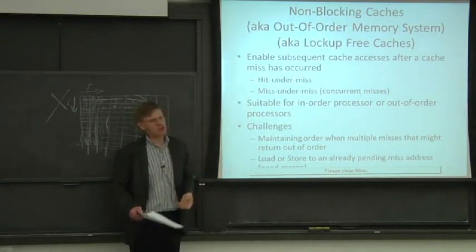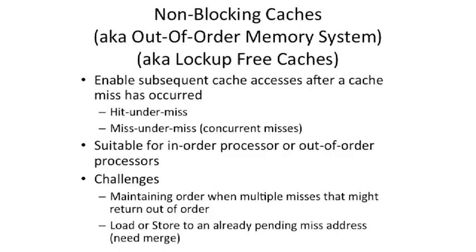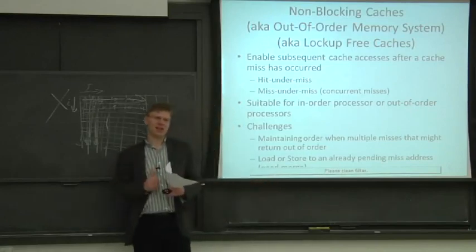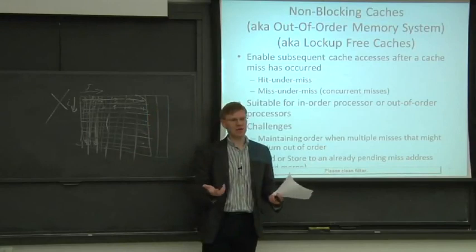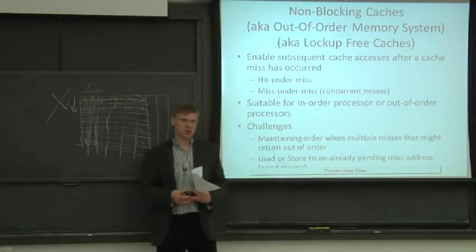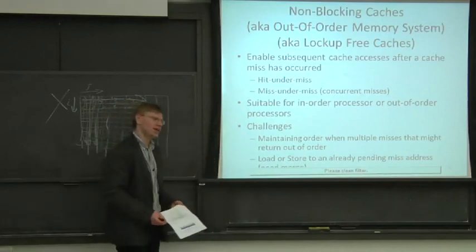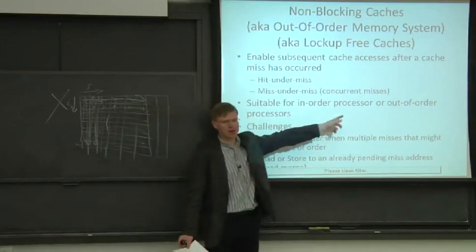Two major things this allows you to do: it allows you to have a cache hit under a miss, and it allows you to have a miss under a miss. A miss under a miss means you do a load to some address and it takes a cache miss, then you keep executing your program, do another load, and that also takes a cache miss. A non-blocking cache allows you to process both of these things — that's miss under miss.